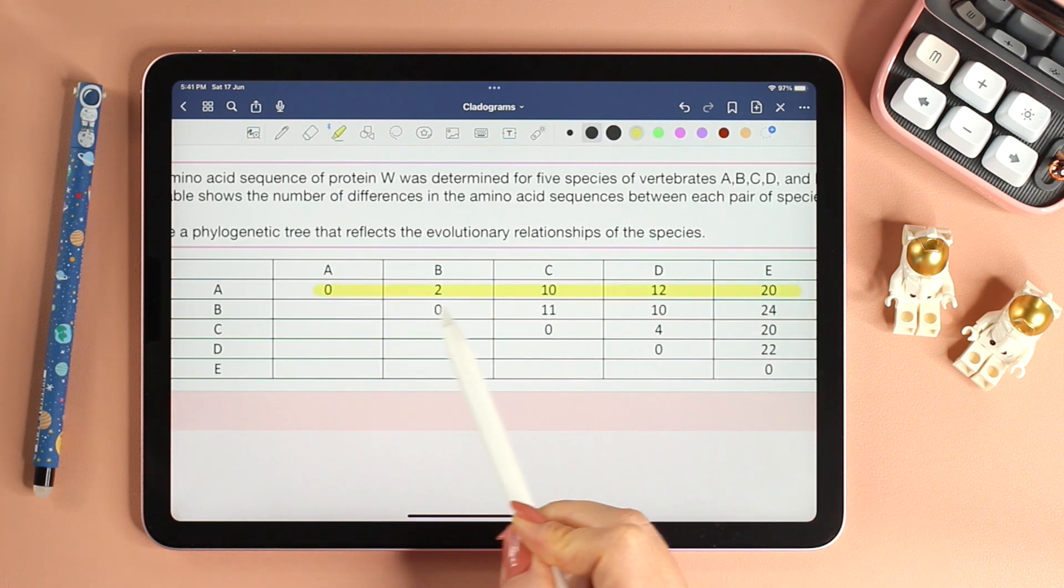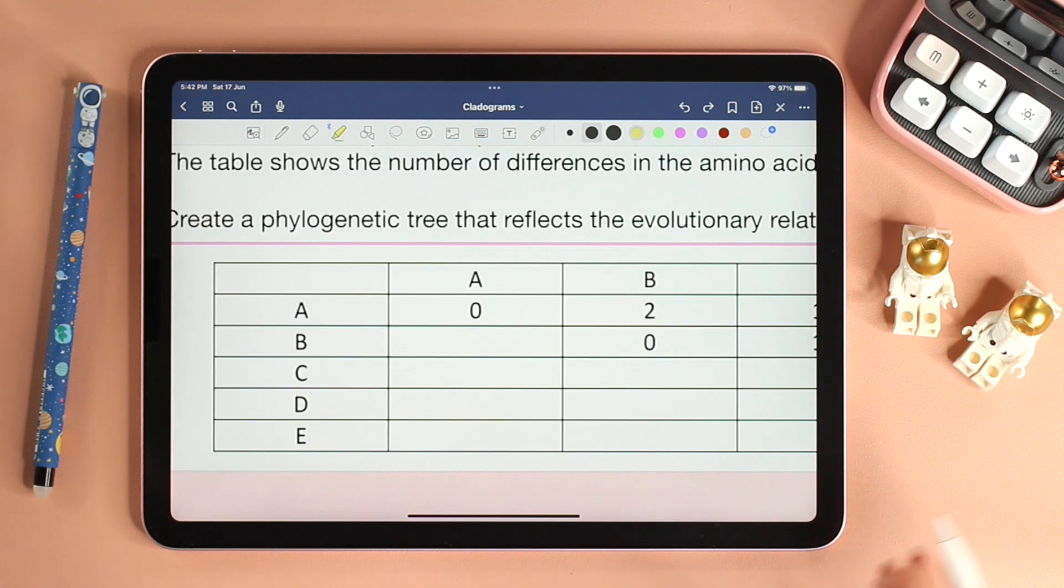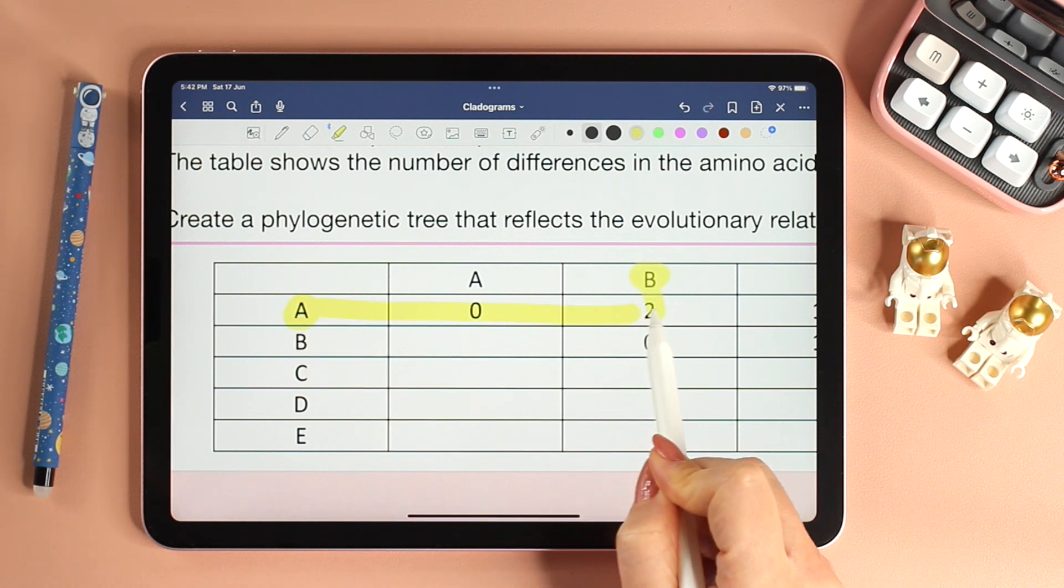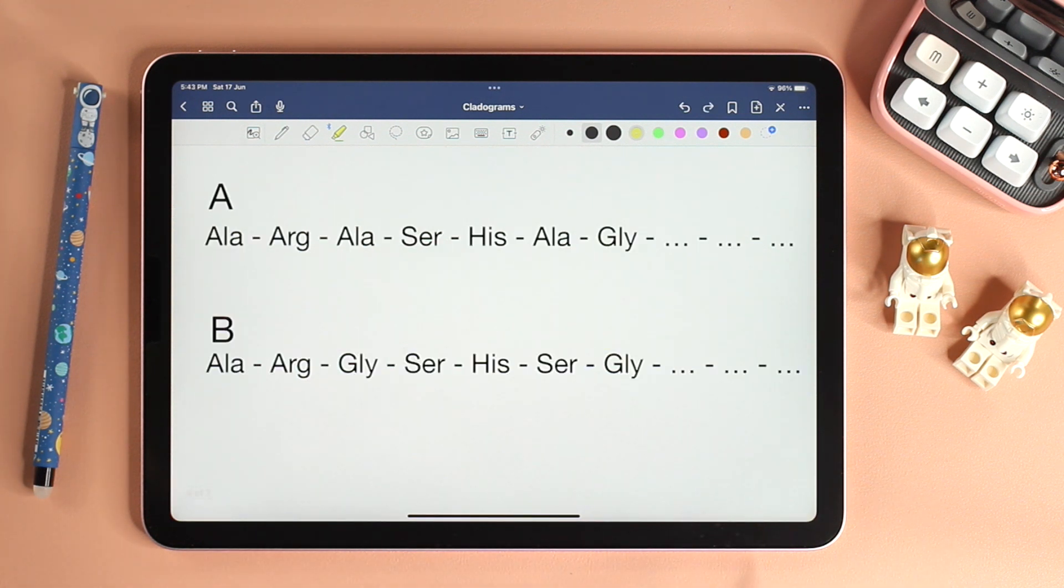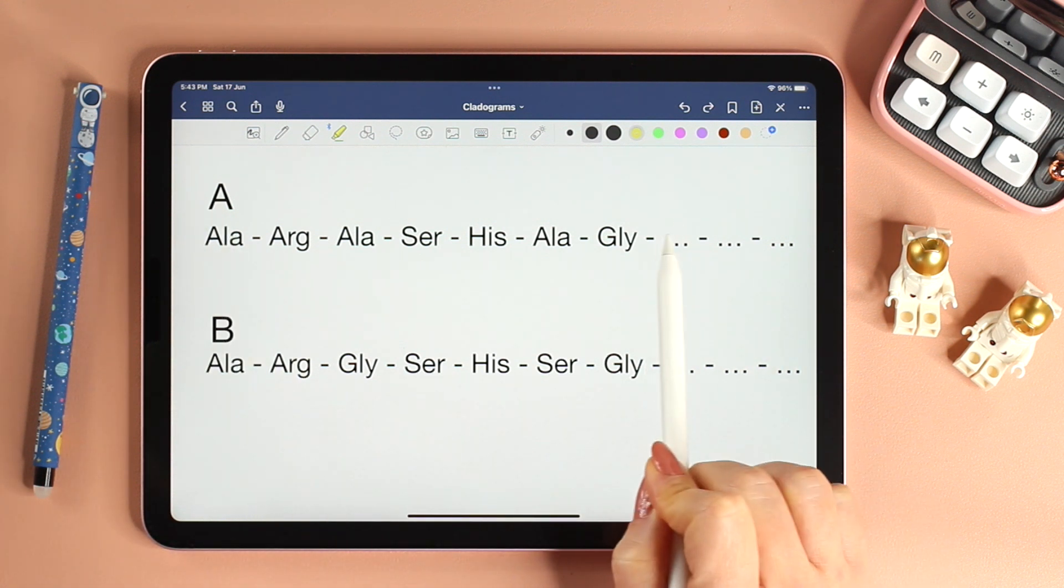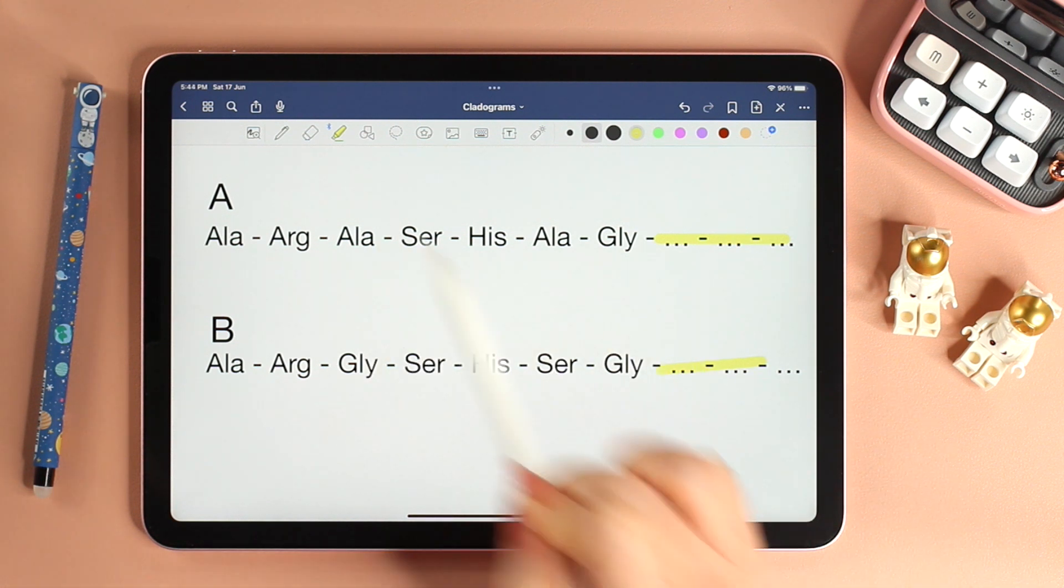These numbers represent the differences in the amino acid sequences. For example, if we look at species A and B, the number is 2. This means that if we look at the amino acid sequences of species A and B, assuming that these are similar, if we find differences, I can spot two differences.